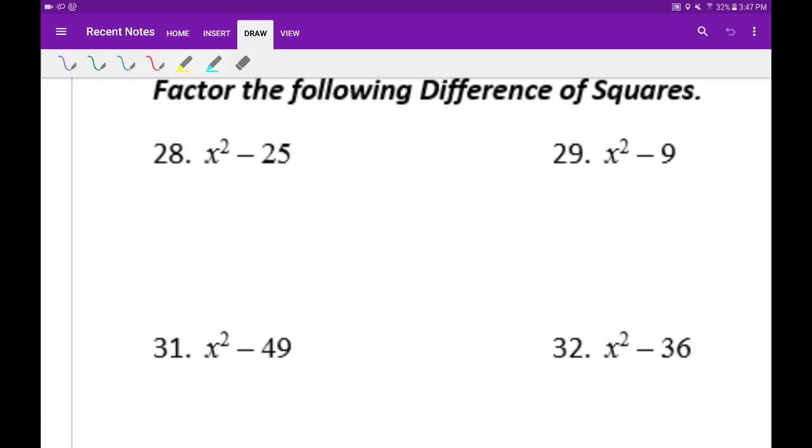So basically we want to check to see if the first term is a perfect square and the back term is a perfect square. Also, we need to make sure there is a difference sign there. If they have a difference sign, it's very possible it could be a difference of squares.